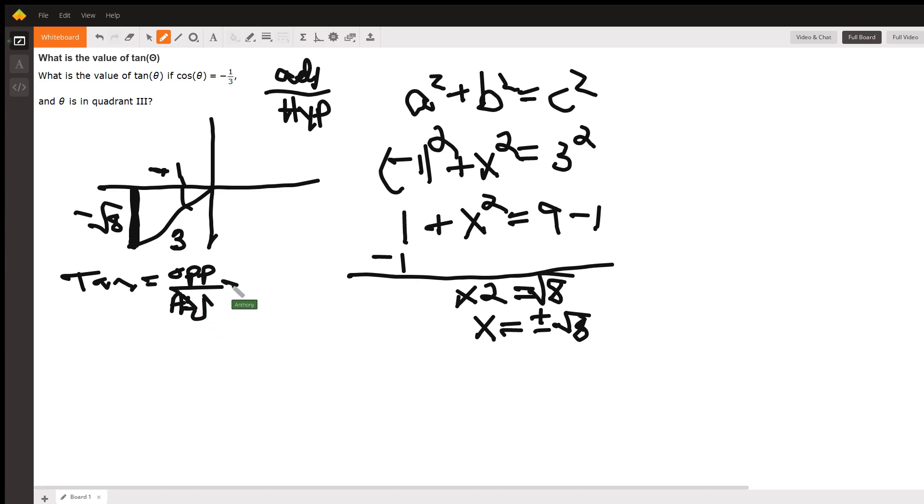And then so if tangent equals the opposite over the adjacent, then I'm going to have that it's my answer, which is going to be opposite is negative square root of eight over the—sorry—the negative one over the adjacent.